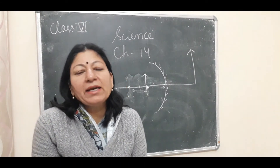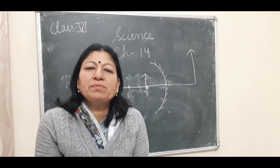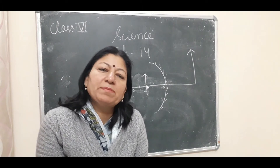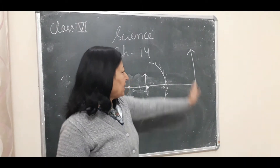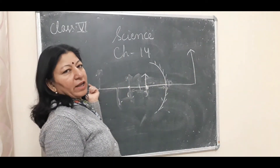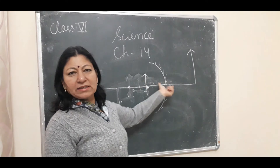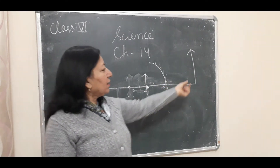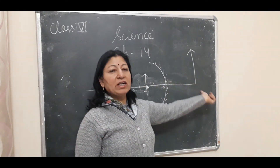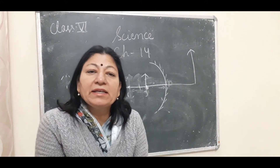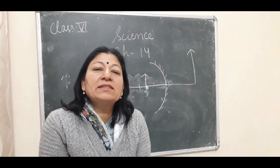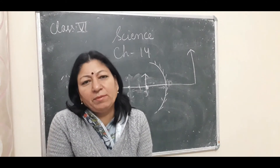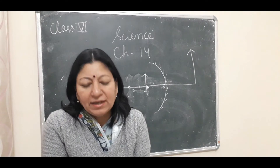Convex mirror always forms an erect, virtual, and smaller image, no matter where the object is placed — from infinity to focus. It always produces a diminished image.